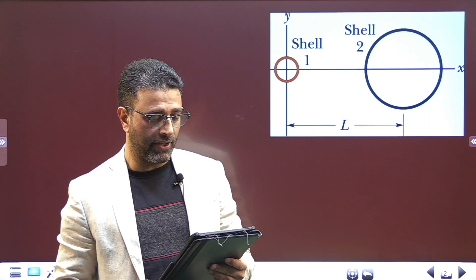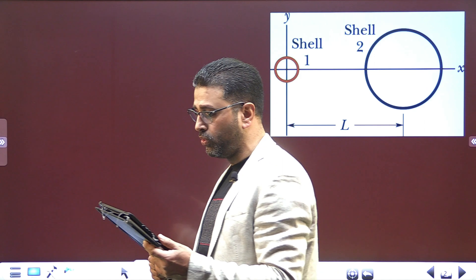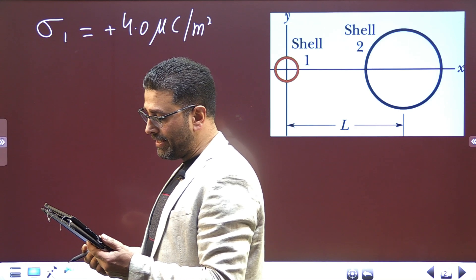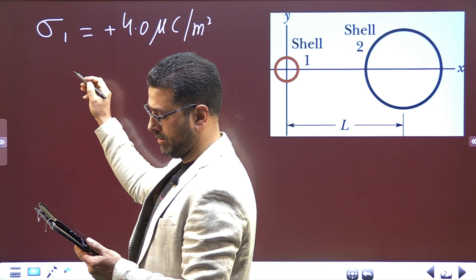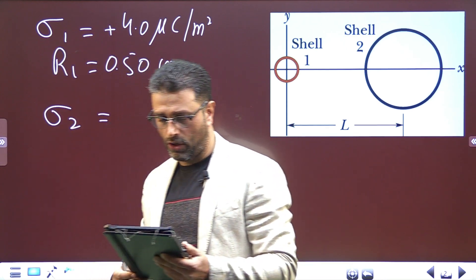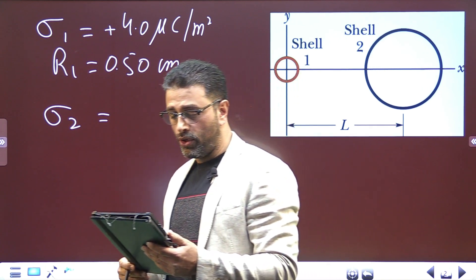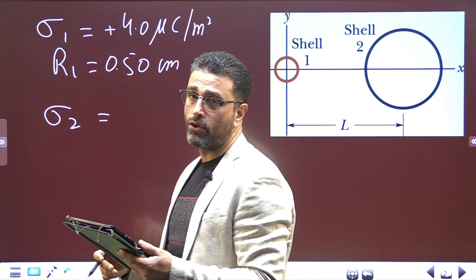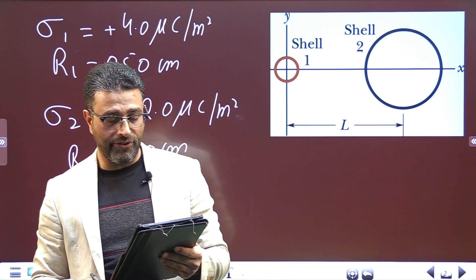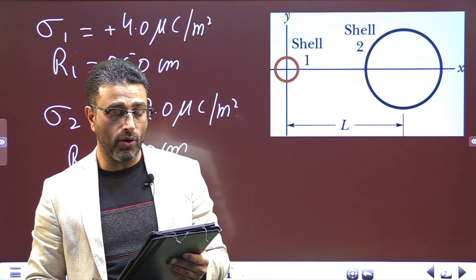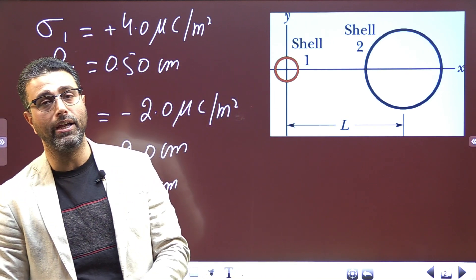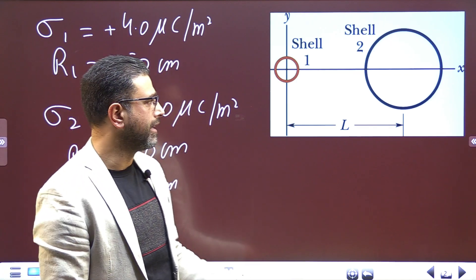Shell one has a uniform surface charge density of +4.0 microcoulombs per meter squared and a radius of 0.50 centimeters. Shell two has a uniform surface charge density of -2.0 microcoulombs per meter squared. Other than at x equals infinity, where on the x-axis is the net electric field equal to zero?